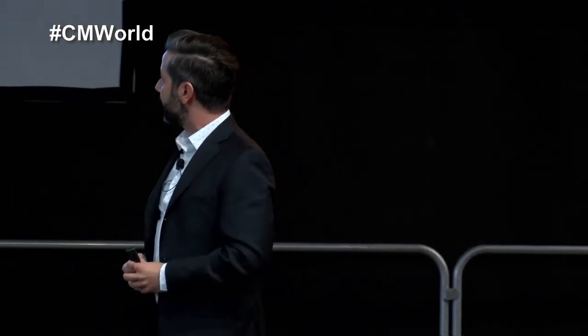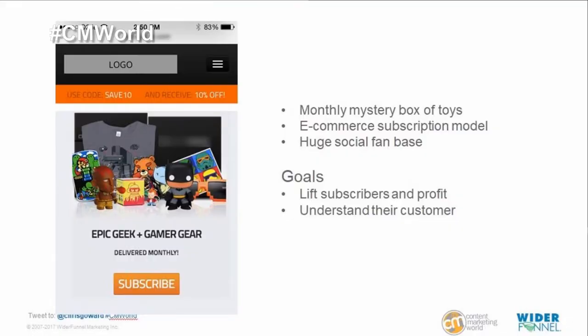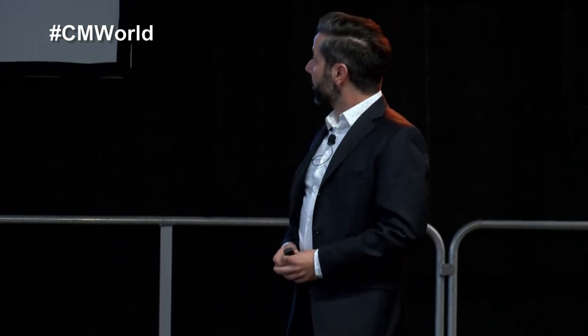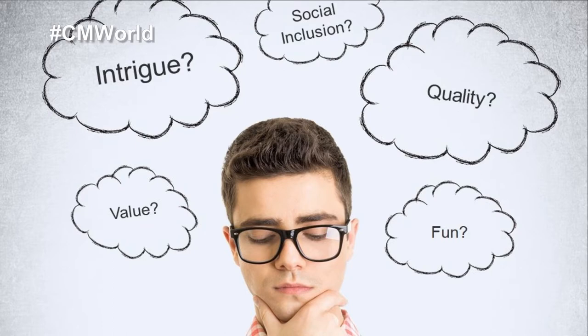I'm going to show you frameworks — much more powerful than lists of words — that you can use to find the context that applies to your situation. Here's another example: a subscription model, very similar to the last but a very different target audience — geeks and gamers looking for a monthly shipment of surprise stickers, t-shirts, squishy things, and all kinds of stuff they love. They wanted to increase subscribers and profit, and they also wanted to understand who their target audience is and what motivates them to buy. Is it quality? Is it fun? Is it the mystery? Is it becoming part of a community — social inclusion? What drives them to buy?